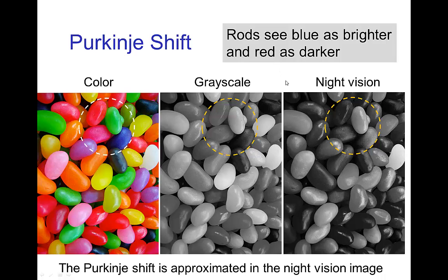This night vision which only has a sense of value is not the same as what you would find with gray scale, because blue things or things towards the blue side of the spectrum are brightened, whereas things towards the red side of the spectrum look darker. In this image on the right is an estimate of what these jelly beans would look like when seen only with the rods.